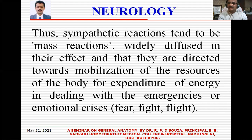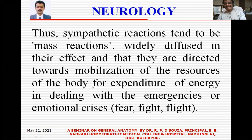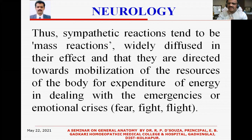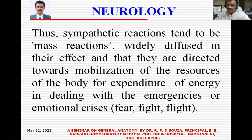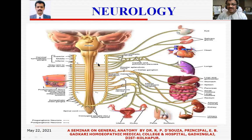Sympathetic reactions tend to be mass reactions — widespread and widely diffused in their effect — directed towards mobilization of the body's resources for expenditure of energy in dealing with emergencies. These characteristics are required for emotional crises like fear, fright, and flight — meaning to run away — or fight, meaning physical altercation. In all such situations the sympathetic flow gives you all these responses. This is the sympathetic chain on both sides, formed from T1 to L2, with sympathetic nerves, various ganglia including the celiac ganglion, and cardiac and pulmonary plexuses going to the heart and lungs.